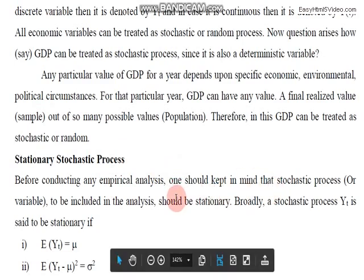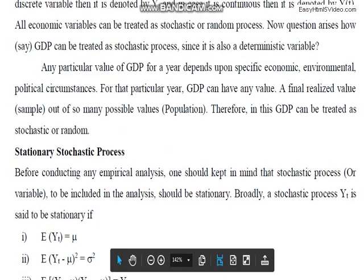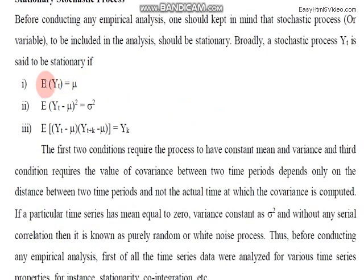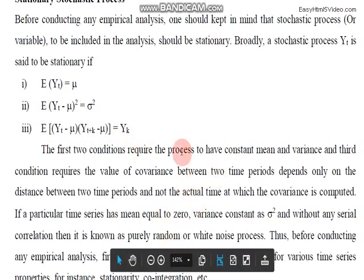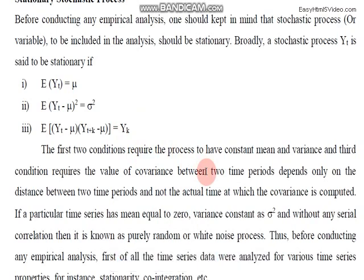Any time series can be termed stationary if it fulfills the following three conditions. First, the mean of the variable or time series should be constant, equal to μ or a constant. Second, its variance should also be constant. Third, its covariance γ_k — the covariance between two periods — should be constant, meaning it should depend upon the time lag and not on which specific years the values are taken from. For example, estimating covariance from 2015 to 2016 depends only on the lag of one year.